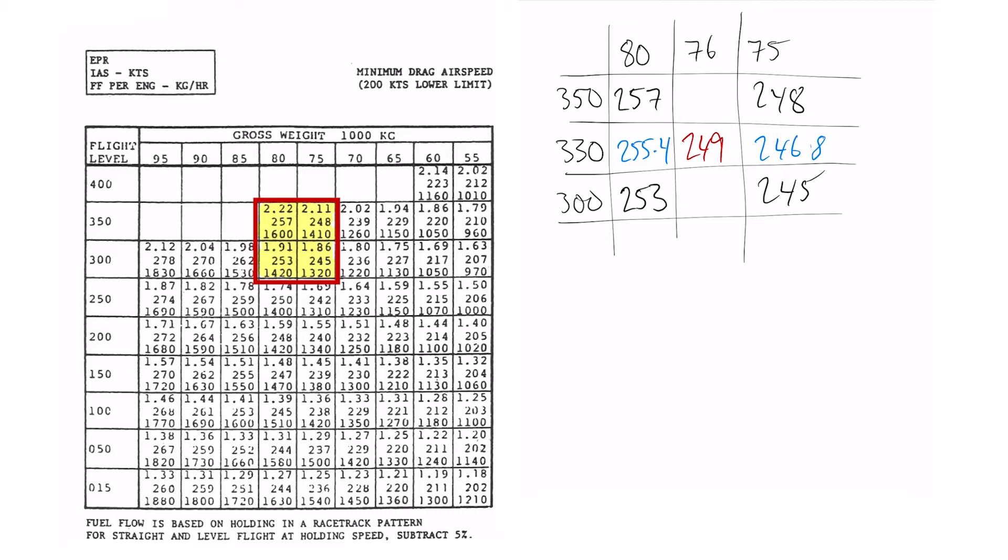Now in the exam they want that answer in a true airspeed so we're going to have to convert this from an indicated airspeed to a true airspeed. We'll use the whiz wheel, converting it from indicated airspeed to a Mach number and then from a Mach number to a true airspeed using a calculator. Now there's a direct relationship between indicated airspeed and Mach number which we've already talked about. So we can easily calculate the Mach number and we won't have to worry about any temperatures or anything like that until we convert it to TAS.